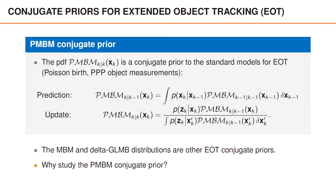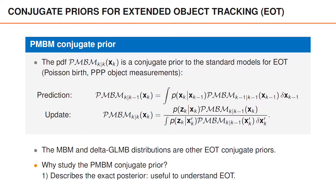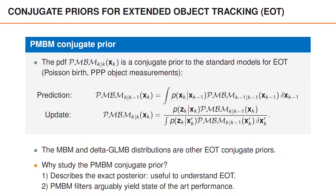It's reasonable to question why we should focus on the PMBM conjugate prior and how that prior can be used to derive extended object tracking algorithms. There are at least two good reasons for this. First, the PMBM conjugate prior enables us to study the exact posterior distribution, which is very useful if you want to understand extended object tracking. Second, the algorithms derived from the PMBM conjugate prior yield excellent performance and can be argued to be state-of-the-art algorithms for this problem.